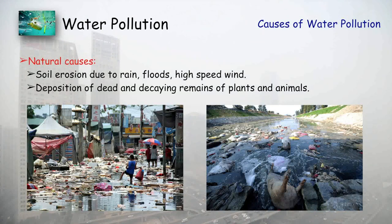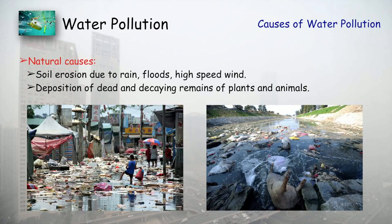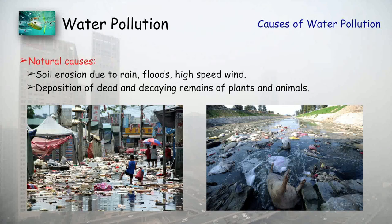There are many causes of water pollution, divided into two parts: natural causes and man-made causes. In the case of natural causes, soil erosion due to rain, flood, and high-speed wind may cause pollution in water. Deposition of dead and decaying remains of plants and animals will also degrade the property of the water, and that is also a major pollutant.